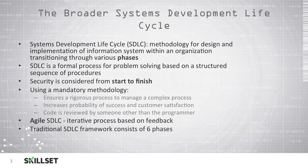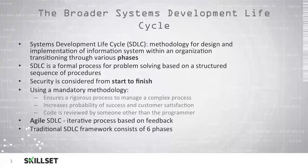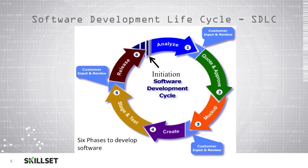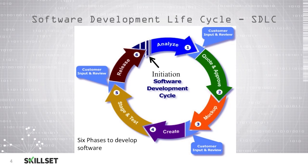The Agile software development lifecycle is an iterative process based on feedback after each phase. The traditional SDLC framework consists of six phases. The software development lifecycle initiates with the Analyze phase. After the Analyze phase, we have input and review from the customer. We then move on to the Quote and Approve phase, and then to the Mockup phase.